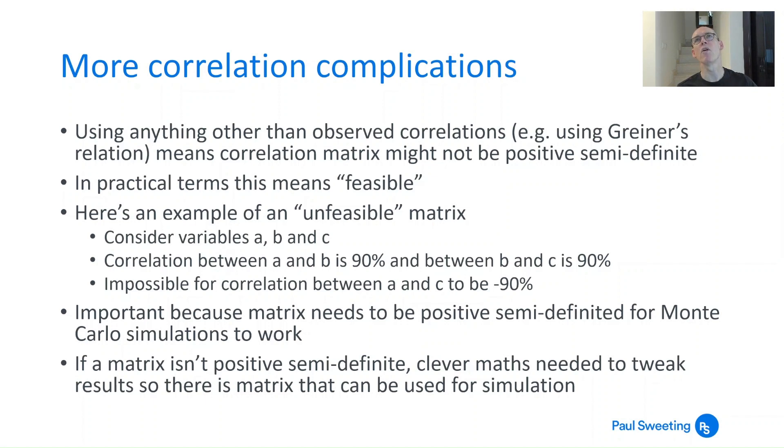Why is this important? Well, if you want to use a correlation matrix for simulation at all, then it's got to be positive semi-definite for the maths to work for Monte Carlo simulation. So it's quite important that you do have the right sort of matrix. And to get from a matrix which isn't positive semi-definite to one that is, it involves quite a bit of clever maths to be able to get to the nearest feasible matrix.